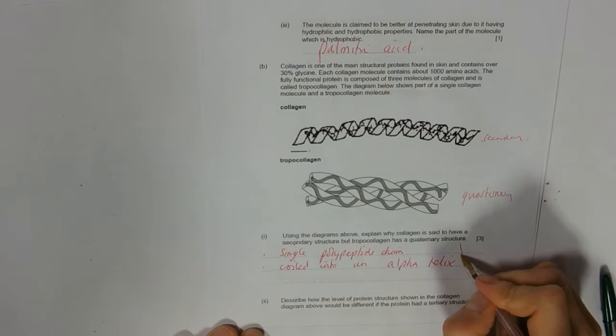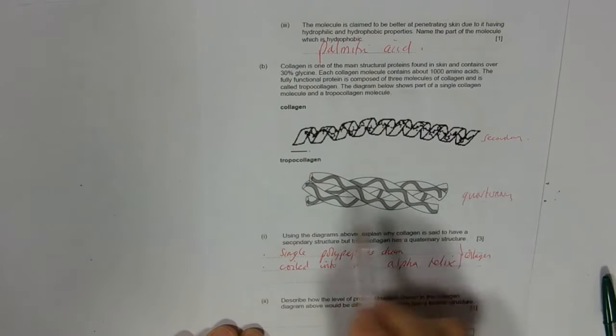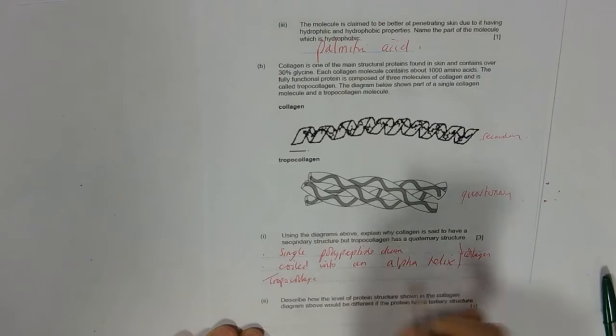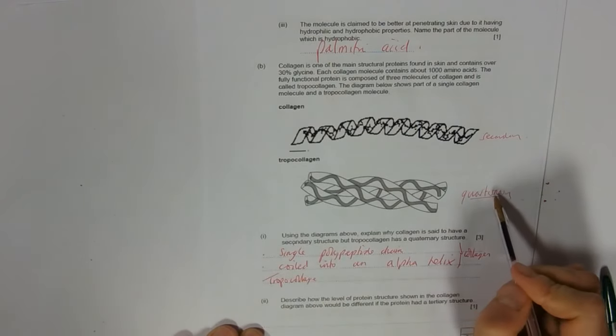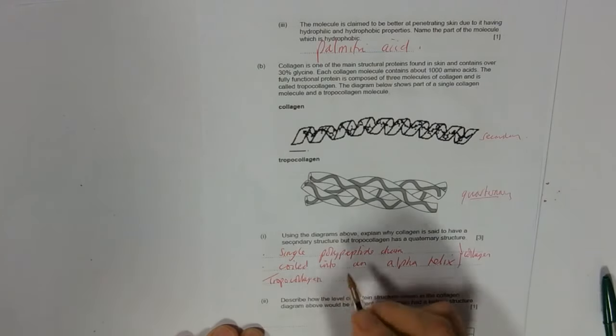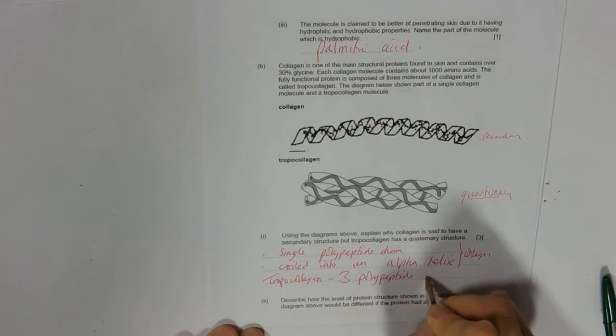Whereas tropocollagen - the big thing about quaternary proteins, you know it's more than one polypeptide chain. So it's got three separate polypeptide chains.